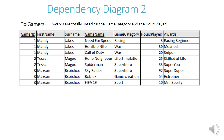Our second dependency diagram is based on a table of gamers from a gaming club. We have gamer ID, first name and surname, the game name, game category (which is based on the game), hours played, and an award — the latest award they've won for doing certain games. For example, Mandy Jakes played Need for Speed for three hours, which is a racing game, so she won a racing beginner award. For Horrible Night, she won a meanest award for playing a war game for 30 hours.